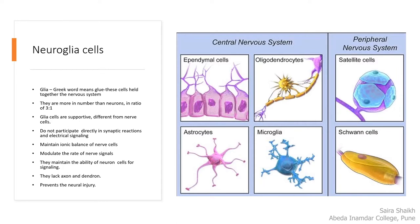Neuroglia cells are the supporting cells. The word 'glia' means glue. These cells hold together the neurons and form the nervous system. They are more in number than the neurons — their ratio is 3 to 1, meaning neuroglia cell number is more compared to nerve cells.